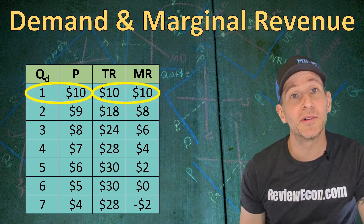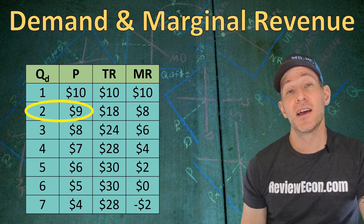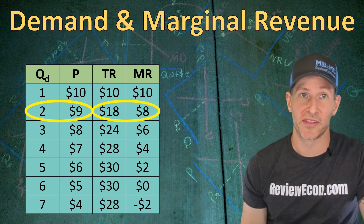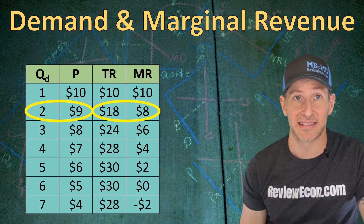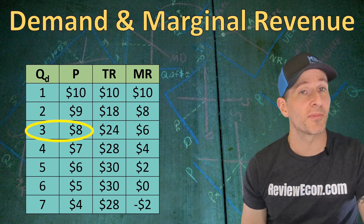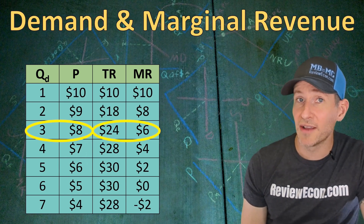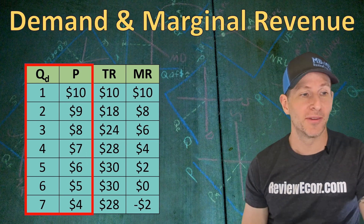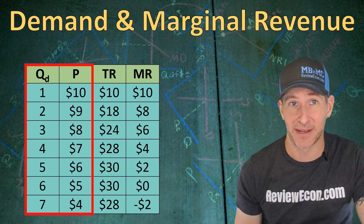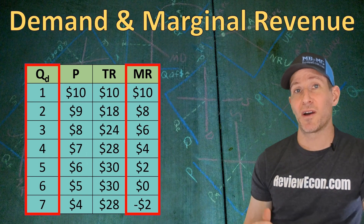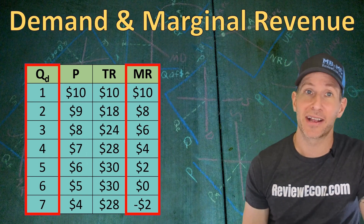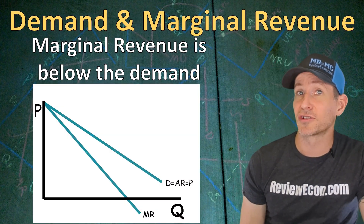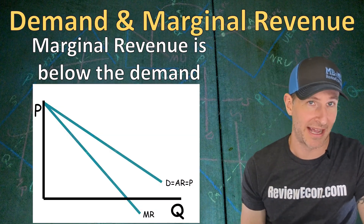If we convert that demand curve to a table with numbers, we can see that the price for the first unit and the marginal revenue will be equal. But as the firm produces more units of output the price is going to have to fall, meaning total revenue increases by a smaller amount than the price — eight dollars in this case. As more units continue to be produced, the price falls further but the marginal revenue falls faster than the price. When we graph out the demand curve, the quantity column and price column make that demand curve, but the marginal revenue curve uses the same quantity with the marginal revenue column. Since marginal revenue is always less than demand, the marginal revenue curve will go below the demand curve on the graph.